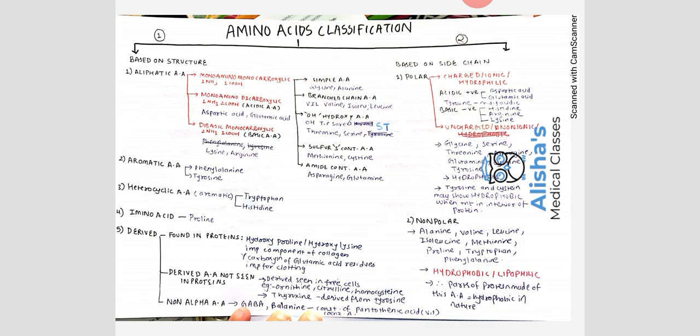Heterocyclic amino acids — remembered as 'HH' for histidine and heterocyclic — include tryptophan and histidine. Histidine is aromatic but has a heterocyclic structure. The fifth category under structure is derived amino acids, which has three subcategories: those found in proteins, derived amino acids not seen in proteins, and non-alpha amino acids. Hydroxyproline and hydroxylysine are found in proteins and are important components of collagen.